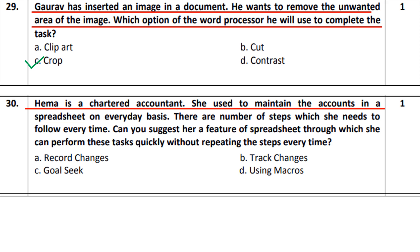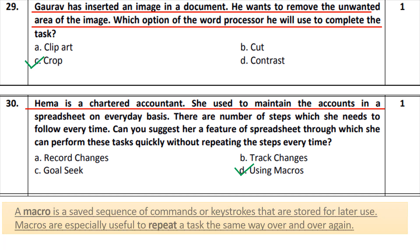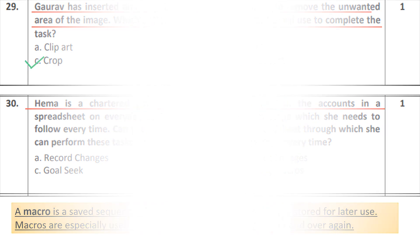Question number 30: Hema is a chartered accountant who maintains accounts in a spreadsheet on an everyday basis. She repeats a number of steps every time she opens the spreadsheet. She should use Macro. A macro saves a series of commands that we repeat over and over, so the same tasks are automated when the spreadsheet is opened. So option number D, using Macro, is the correct answer.